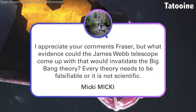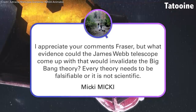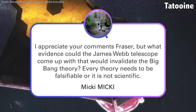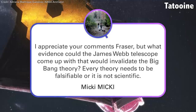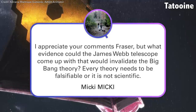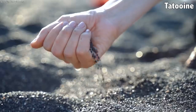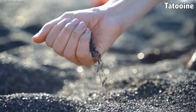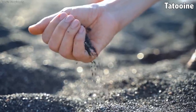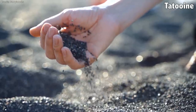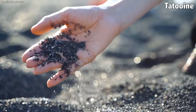Mickey Mickey asks: what evidence could the James Webb telescope come up with that would invalidate the Big Bang Theory? Every theory needs to be falsifiable or it is not scientific. And I'll give you a practical example — the theory of gravity says if you're holding something and you let go, it's going to fall to the ground. The way you falsify that theory is that you let go of things and one of them floats.